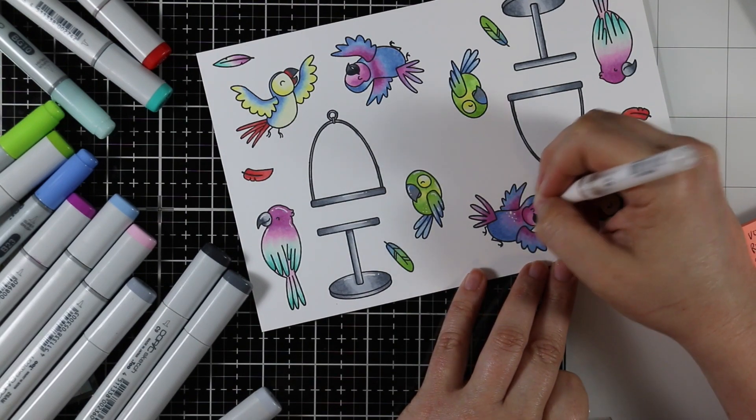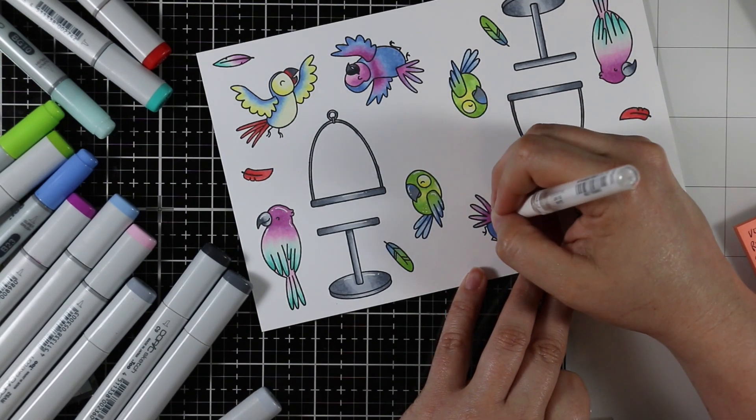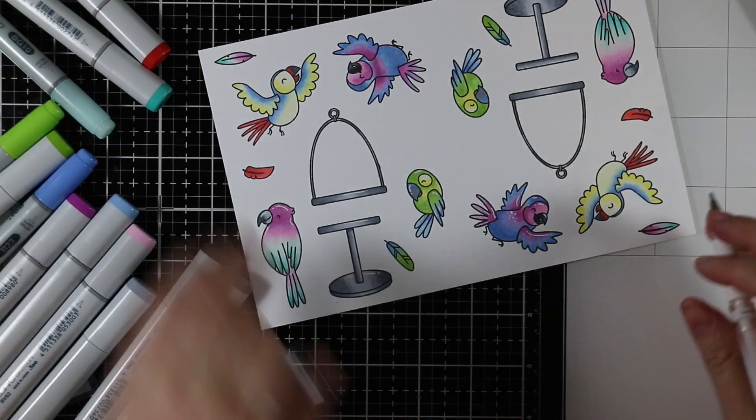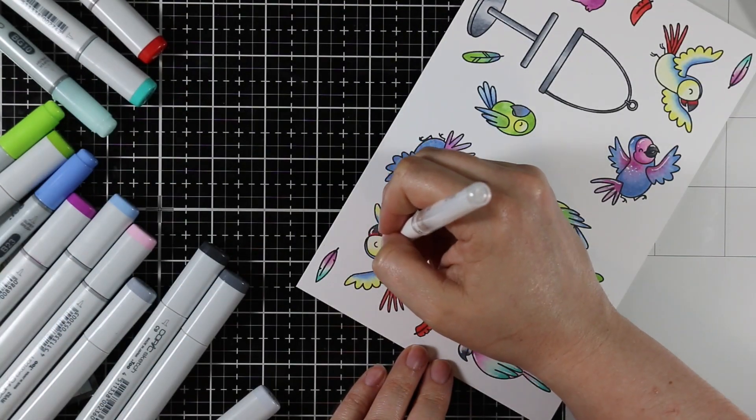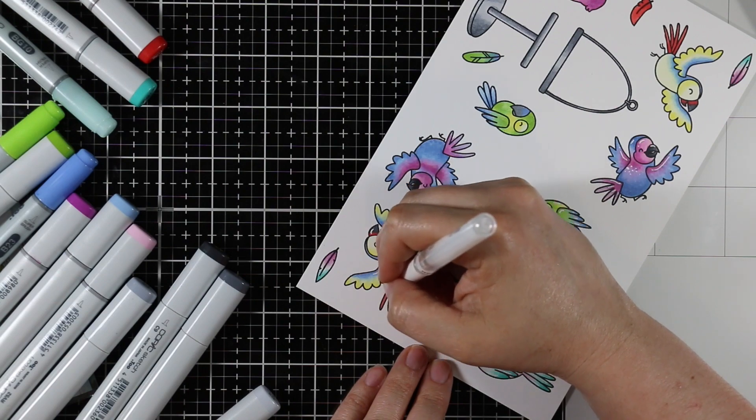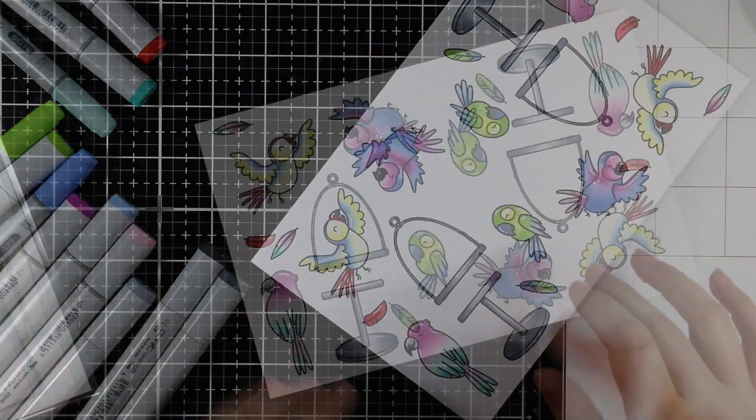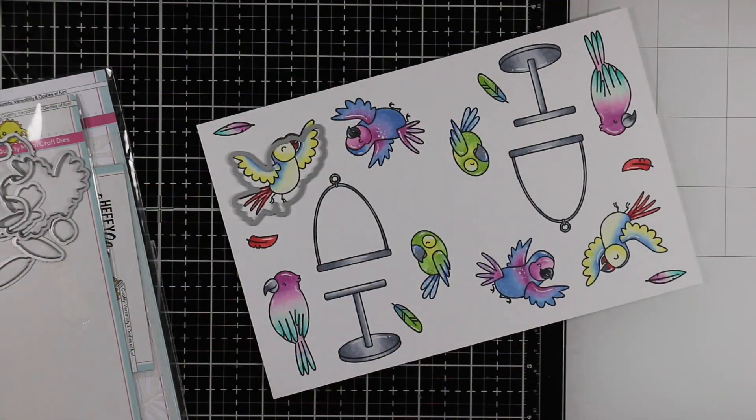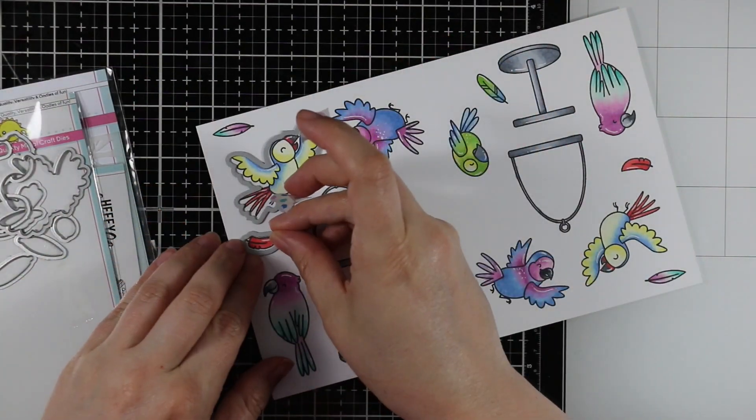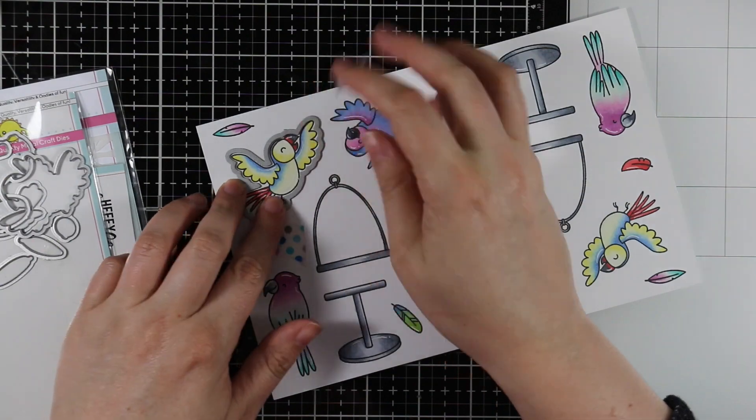I just love how it kind of pops and just finishes off all these images after all of that coloring. I just kept going and added them in the same areas for the same bird when I flipped everything around. Once I was done all of my little white gel pen highlights I took the coordinating die set and taped everything into place.